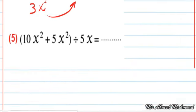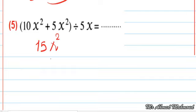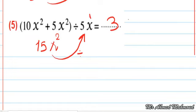Next: 10x power 2 plus 5x power 2, all divided by 5x. First, simplify the bracket: 10 plus 5 equals 15, and we keep x power 2 without change, giving 15x power 2. Remember, when we add or subtract like terms we leave the symbols without change. Then divide 15x power 2 by 5x: 15 divided by 5 equals 3, and x power 2 divided by x power 1 equals x. The final answer is 3x. This was the last example. See you next time, InshaAllah. Was-salamu alaykum wa rahmatullahi wa barakatuh.